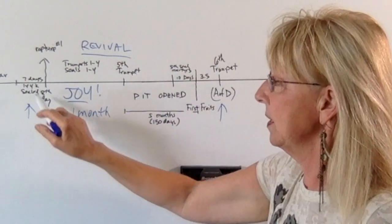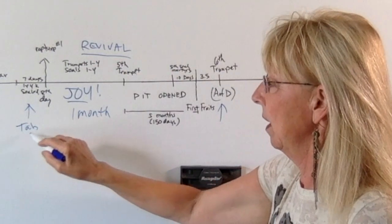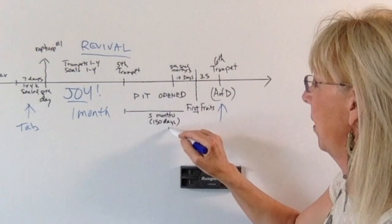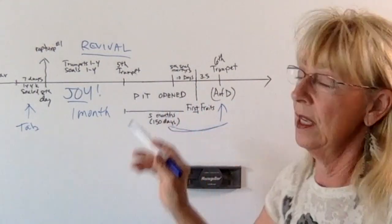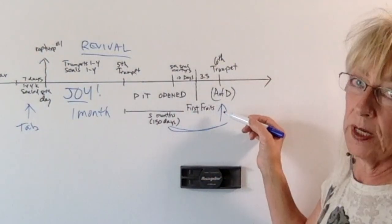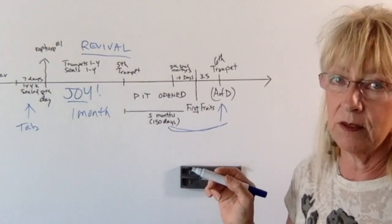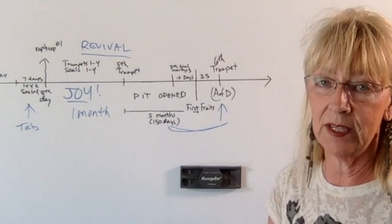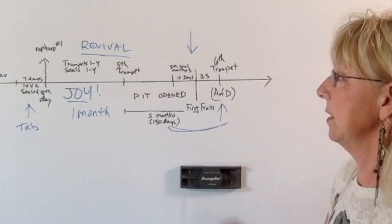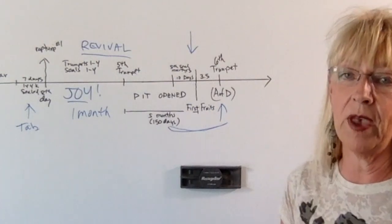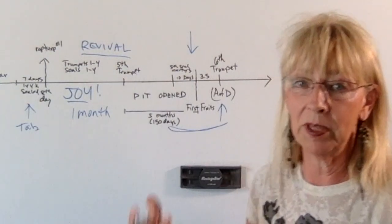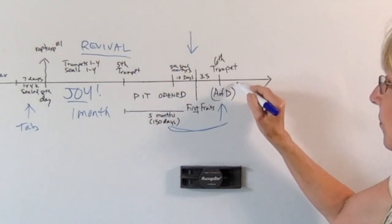If this happens over Tabernacles, the time between Tabernacles and Passover, when this stuff happens, is about six months. We know the sixth trumpet will sound at the same time as the abomination of desolation. Satan will have been cast out of heaven before then, basically on first fruits. We know that before Satan is cast out, there are martyrs in heaven, but the beast hasn't started to reign yet.